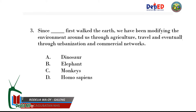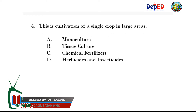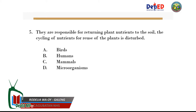Three: Since blank first walked the earth, we have been modifying the environment around us through agriculture, travel, and eventually through urbanization and commercial networks. A - dinosaur, B - elephant, C - monkeys, D - Homo sapiens. Four: This is the cultivation of a single crop in large areas. A - monoculture, B - tissue culture, C - chemical fertilizers, D - herbicides and insecticides. Five: They are responsible for returning plant nutrients to the soil; the cycling of nutrients for reuse by plants is disturbed. A - birds, B - humans, C - mammals, D - microorganisms.